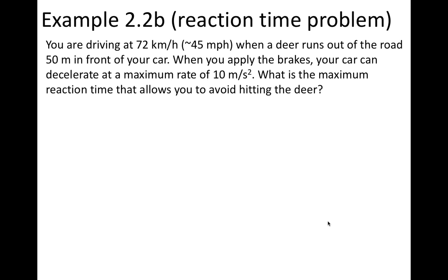In this example, we're driving at 72 kilometers per hour — about 45 miles per hour — and a deer runs out onto the road 50 meters in front of your car. Recall that a meter is about a yard, so 50 meters is about half a football field. When you apply the brakes, the car can decelerate at a maximum rate of 10 meters per second squared, which is about the maximum deceleration for something like a Honda Civic. All of these numbers are quite reasonable for a braking problem.